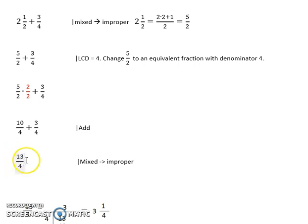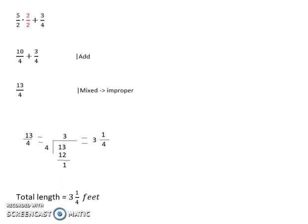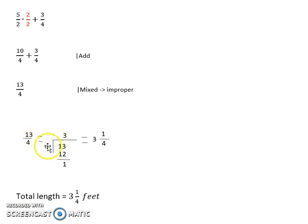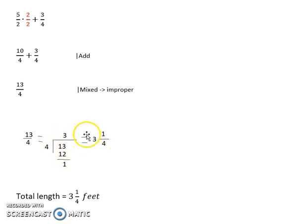We're not quite done yet — we still have to convert thirteen over four from an improper fraction to a mixed number. To do that, we divide the numerator by the denominator using long division. Thirteen divided by four: four goes into thirteen three times, since three times four is twelve. Thirteen minus twelve gives a remainder of one. So the quotient three becomes the whole number part, the remainder one becomes the numerator, and we keep the original denominator of four. Therefore, thirteen over four is equivalent to three and one-fourths. The total length of the two pieces is three and one-fourths feet.